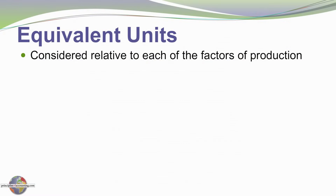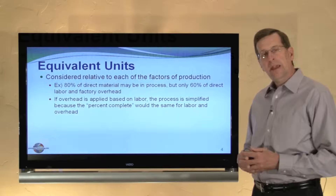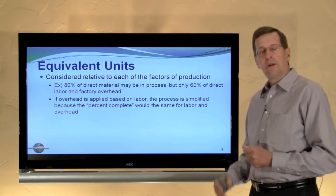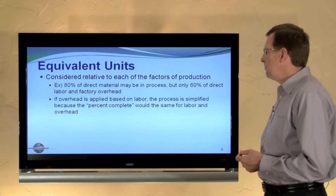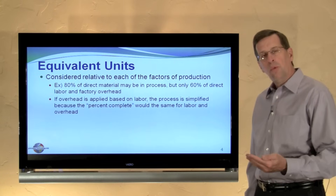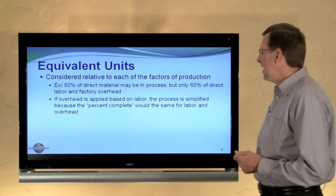Recognize that equivalent units are not necessarily the same across all factors of production — we have material, labor, and overhead. For example, we might be only 80% complete with respect to materials and only 60% complete with respect to labor and overhead. So we would have more equivalent units of material in process than equivalent units of conversion costs in process. That's perfectly fine and perfectly logical, but it will cause us to adapt our calculations to reflect that fact.